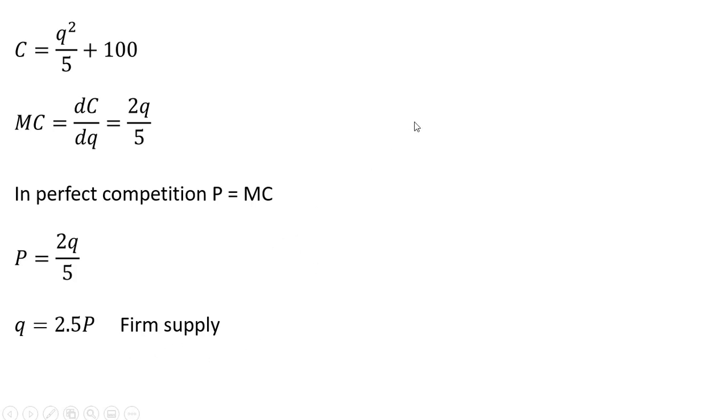Now we're going to get the market supply equation. To get the market supply equation, the market supply quantity supplied Q is going to equal the number of firms in the market multiplied by the individual firm's supply equation. We said that there are 40 firms in this market. So the number of firms is 40. The firm's supply here is this lowercase Q. And now we're going to replace this lowercase Q with 2.5P, making that substitution. And now simplifying, we have this market supply equation.